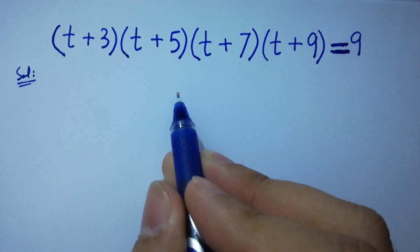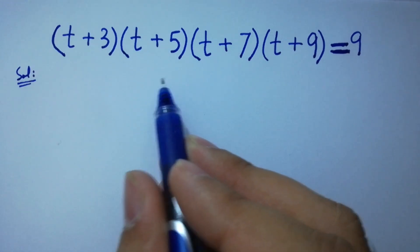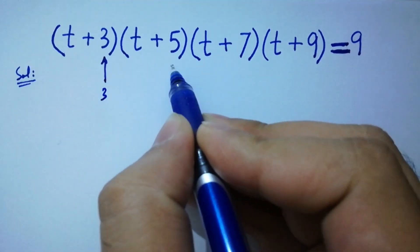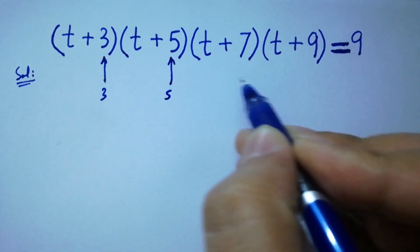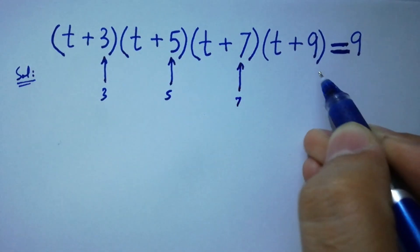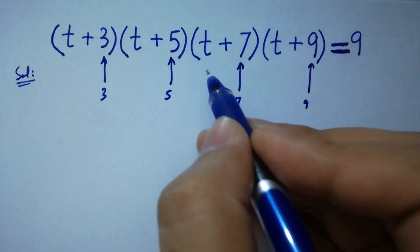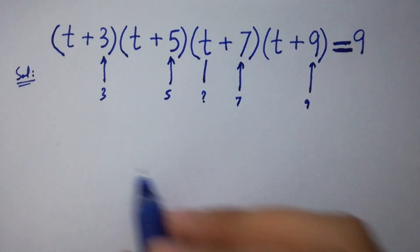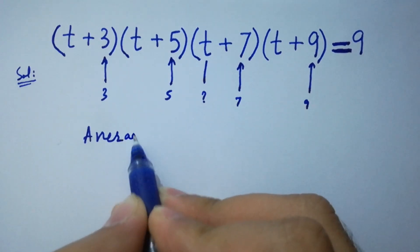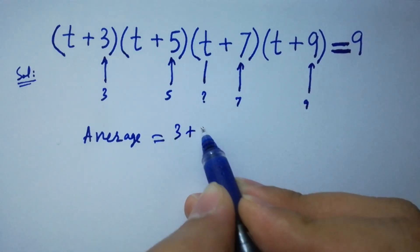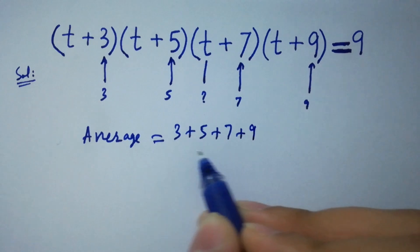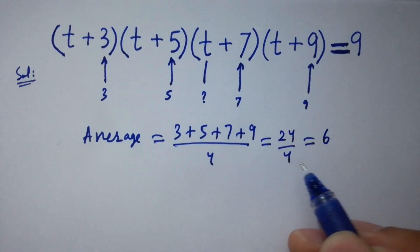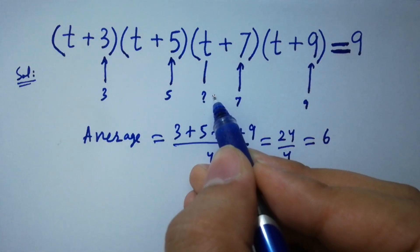This equation has an arithmetic sequence with common difference 2. Here we have 3, 5, 7, 9. Then what is t? For this, we have to find the average, which is equal to (3+5+7+9)/4 = 24/4 = 6. So we have the value of t is around 6.